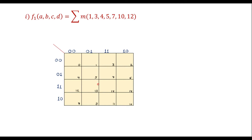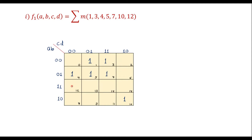This is the structure of a four variable K-map which consists of four rows and four columns. Let A and B be the row inputs, and C and D be the column inputs. The cell numbers are given in decimal values which indicate the min terms. For the given min terms, we enter 1 in the corresponding cells: cells 1, 3, 4, 5, 7, 10, and 12 are marked 1.